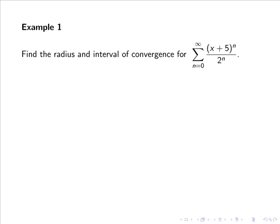Let's find the radius and interval of convergence for the series (x plus 5) to the power of n divided by 2 to the power of n. So first of all, a_n equals (x plus 5) to the power of n all over 2^n, and thus a_{n+1} equals (x plus 5) to the power of n plus 1 all over 2 to the n plus 1.